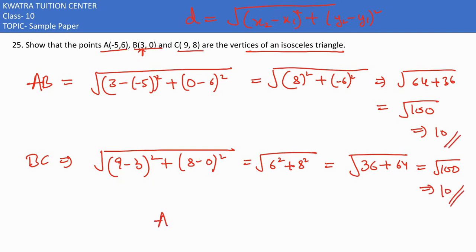So I can understand that AB is equal to BC. So this would form an isosceles triangle.